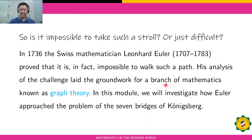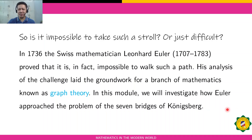So is it possible to take such a stroll, or just difficult? In 1736, the Swiss mathematician Leonhard Euler proved that it is, in fact, impassable to walk such a path. His analysis of the challenge laid the groundwork for a branch of mathematics known as graph theory. In this module, we will investigate how Euler approached the problem of the seven bridges of Königsberg.